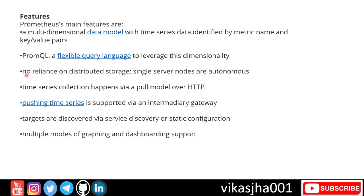Prometheus doesn't need to rely on many external systems. If you have a single server, you install Prometheus server on it and you're good to get started. Prometheus uses an HTTP pull mechanism to collect data from its agents — agents do not push data to Prometheus server; Prometheus server connects to agents to get the data. Pushing time series data is also possible using an intermediary push gateway, but the pull mechanism is generally more suitable.